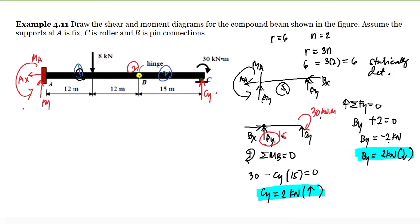For summation of forces along horizontal equal to zero, since there's no opposing force to BX, then BX is equal to zero.